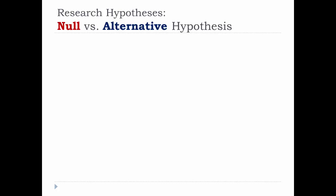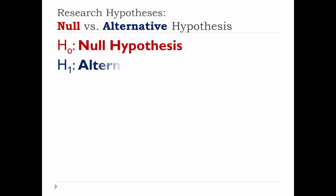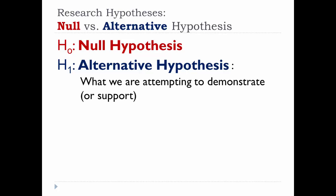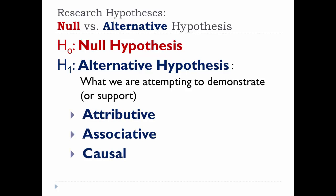As you know, the entire research process revolves around hypotheses, in particular the null hypothesis and the alternative hypothesis. The alternative hypothesis is what we are attempting to demonstrate or support. But we can break the alternative hypothesis down into three types: attributive, associative, and causal.